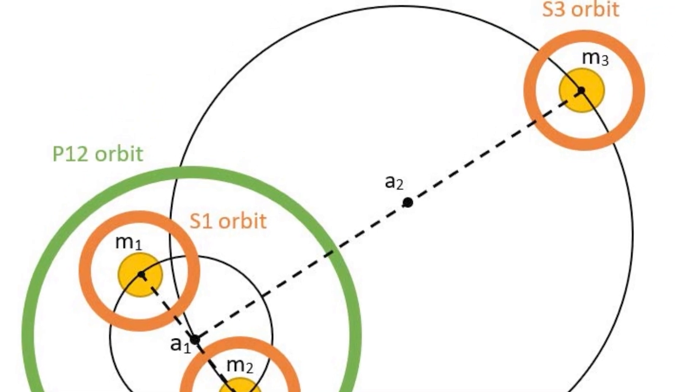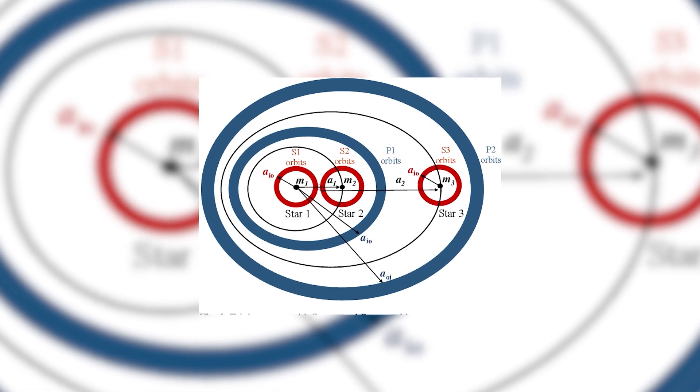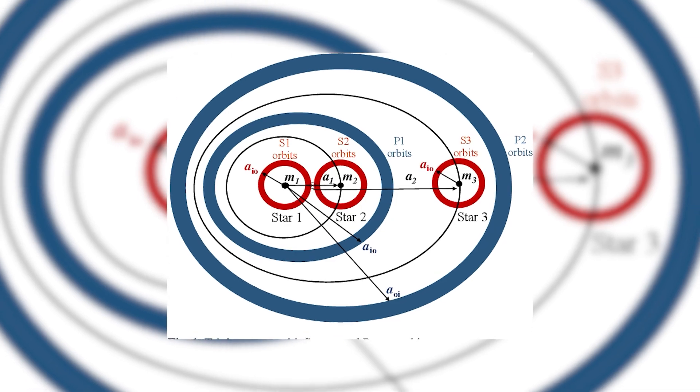They both circle around each other every 30 years. But there's a third star, star C, gravitationally linked to stars A and B, completing an orbit every 400 years.